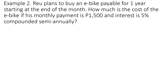Example 2. RU plans to buy an e-bike payable for one year starting at the end of the month. How much is the cost of the e-bike if his monthly payment is 1,500 pesos and interest is 5% compounded semi-annually? Again, the payment interval is monthly (12 times per year) and the interest period is semi-annually (2 times per year) — 12 and 2 are not the same. Therefore, this problem involves general annuity and not simple annuity.